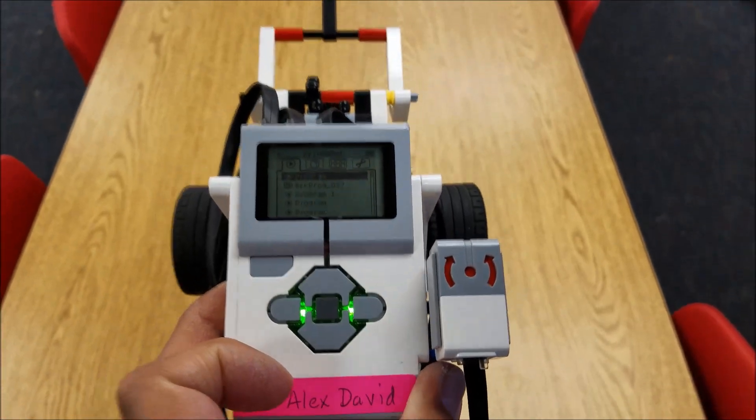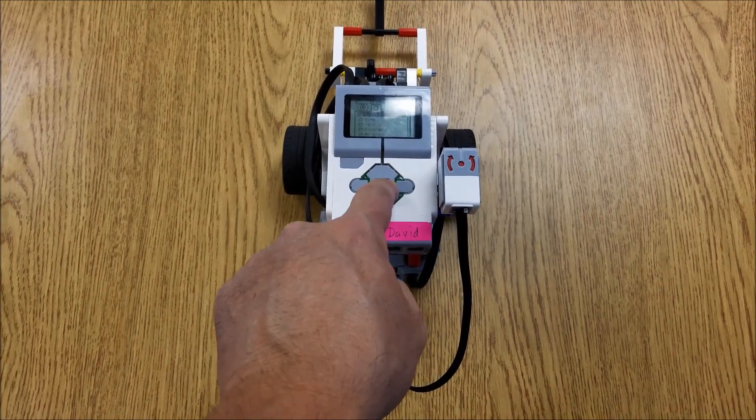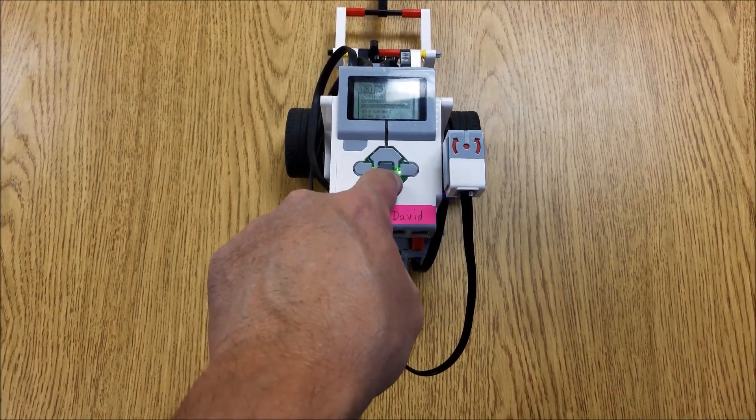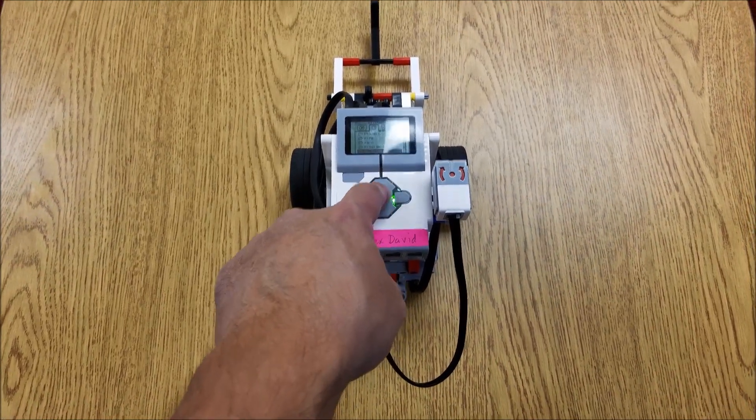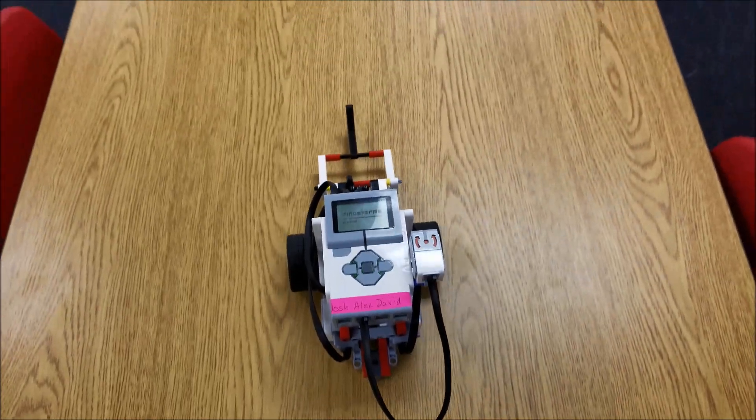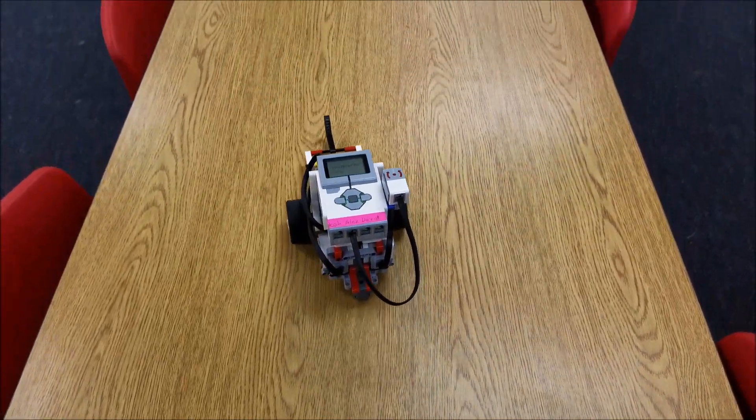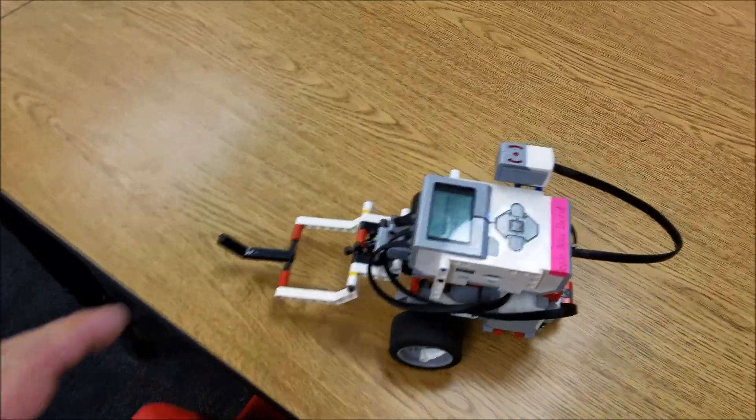So I'm going to put this robot on the table here and I'll find that same program that I just ran for you that went straight and let's see what happens. And can you see what's happening? This robot's turning off to the side here.